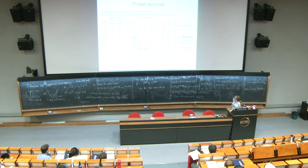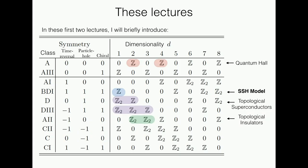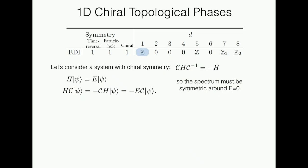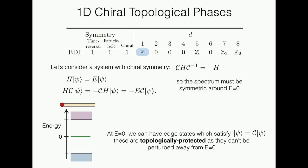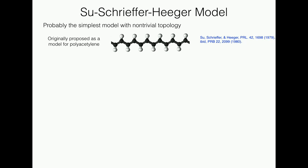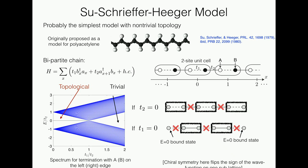I'm going to skip the SSH model due to time, but you can ask me about it later. This is a class that has a mysterious chiral symmetry, and we like it because it's a very simple example of a topological phase. It's the model for polyacetylene. It can be thought of as edge states that arise when you have a tight-binding lattice with two different hoppings; depending on the ratio of those two hoppings, this bipartite lattice can either have protected edge states at the boundary or not.